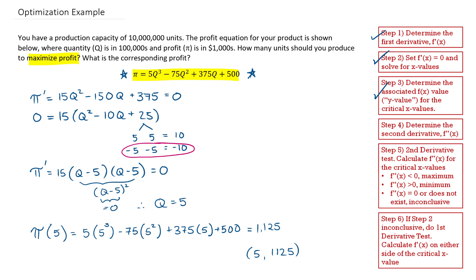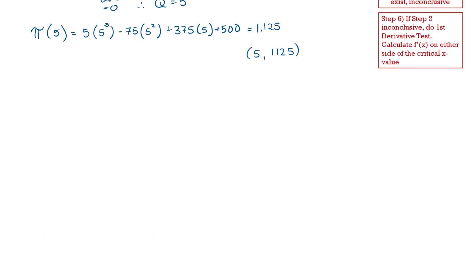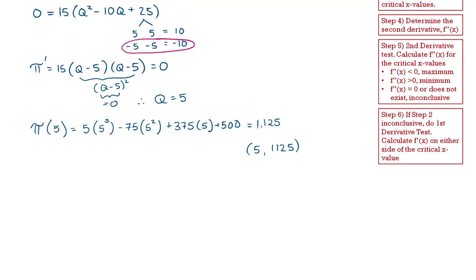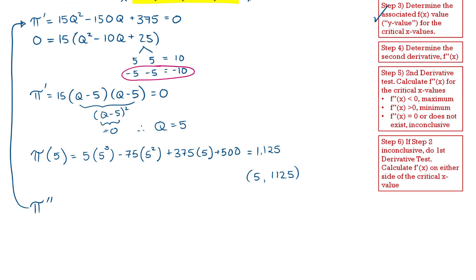The next step is to determine if this is a maximum, minimum, or saddle point — we don't want to confuse minimum and maximum profit. We're going to do the second derivative test to determine the shape of the function. The second derivative is the derivative of the first derivative: the derivative of 15q squared is 30q, the derivative of negative 150q is negative 150, and the derivative of 375 is 0. Step 4 done.